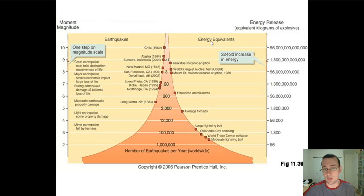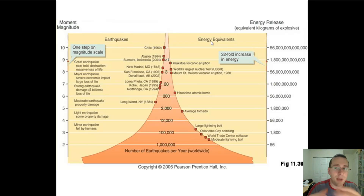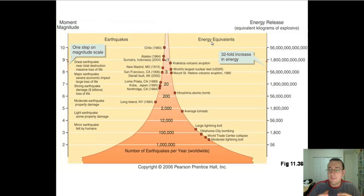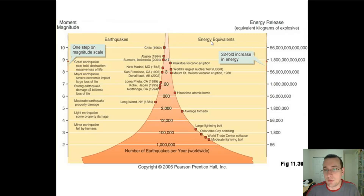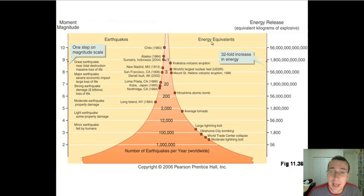When you talk about the intensity of the earthquake, you're talking about how destructive this earthquake was. For example, the Chile earthquake and the Japan earthquake that recently happened were very, very strong earthquakes — they were ginormous moments of magnitude. However, the intensity is a different factor.